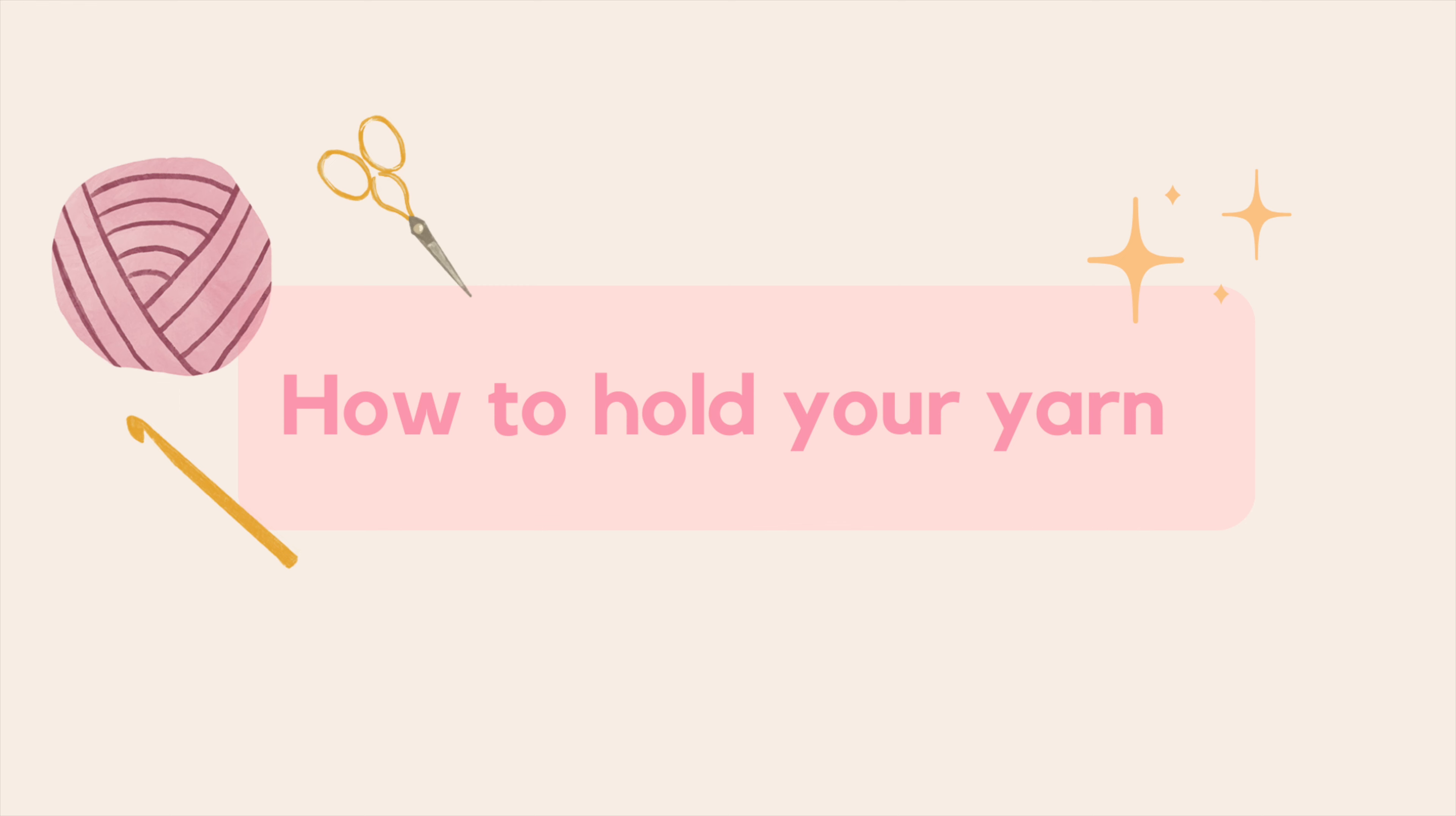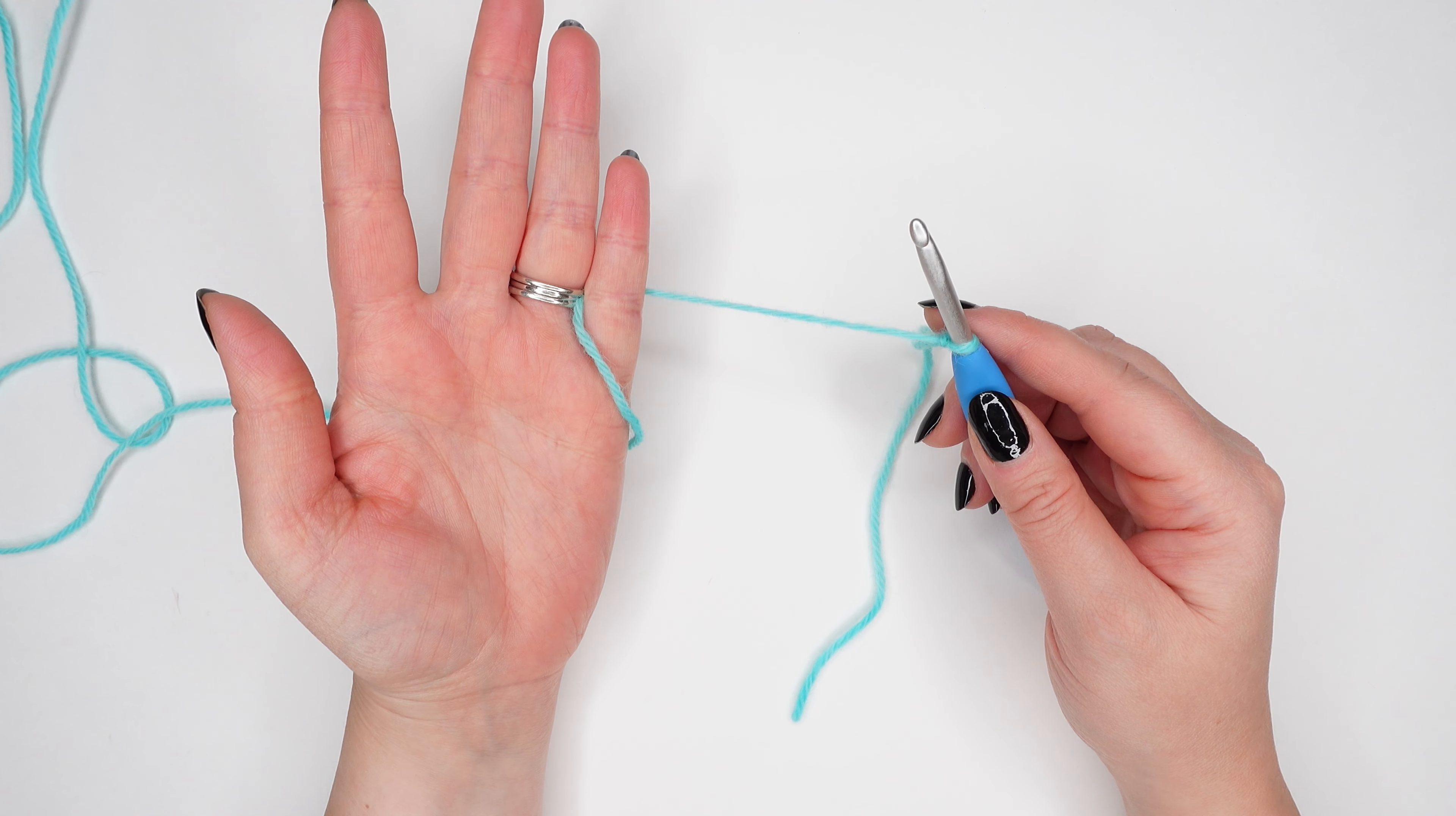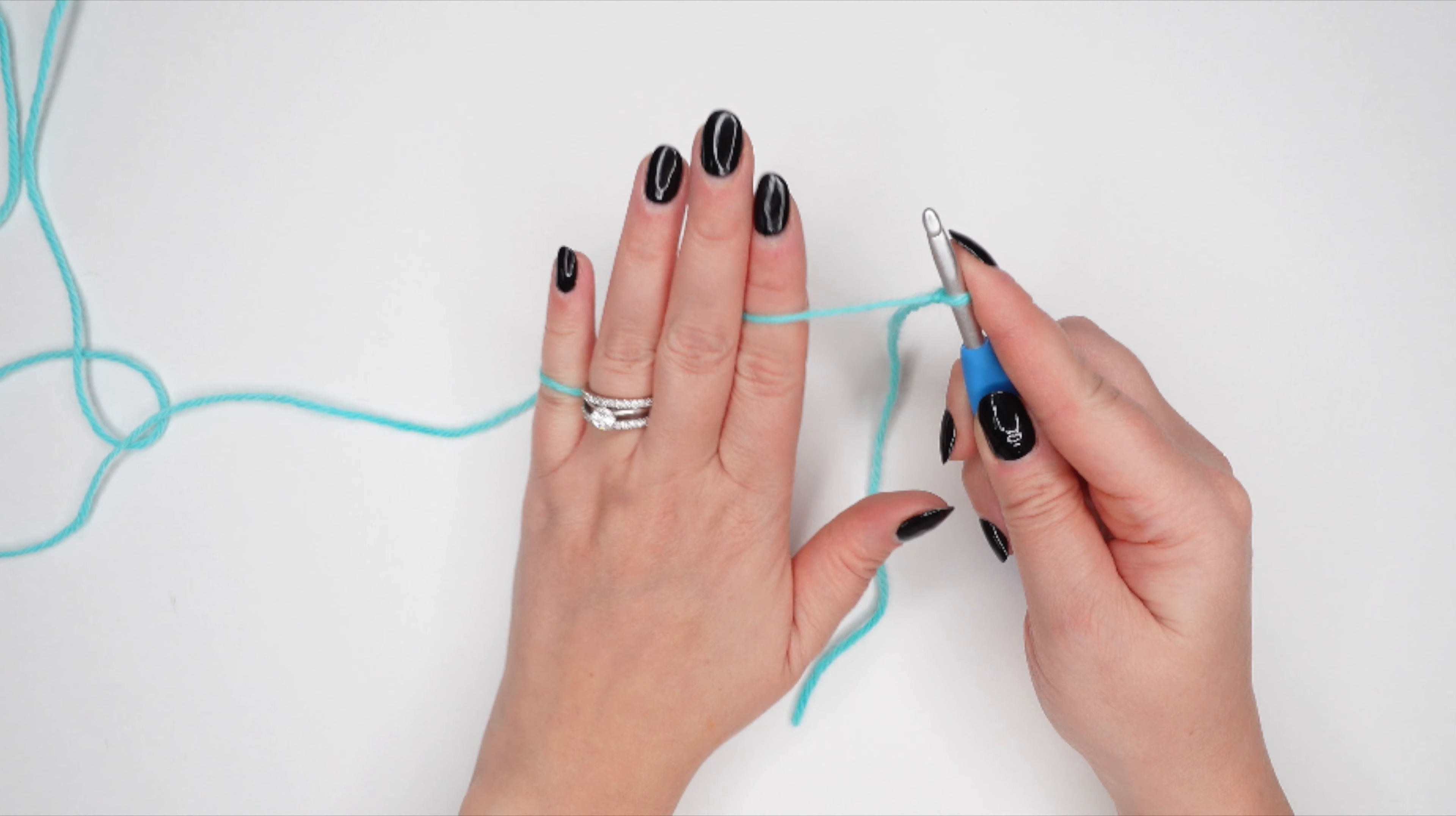Now let's talk about holding our yarn. Take your pinky and grab the yarn and secure it between your pinky and ring finger, and stabilize the slip knot on your hook with your pointer finger. Flip your hand over so that the back of your hand is now facing upward and place your pointer finger under the yarn that is feeding to your hook. That is how to hold your yarn and hook to crochet. Let's call this the crochet position.